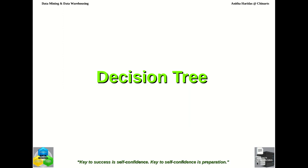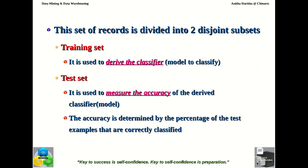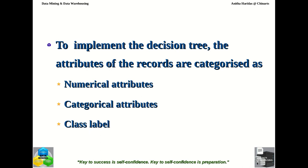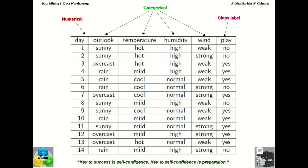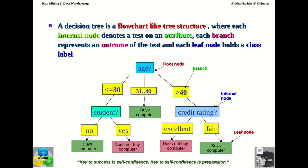In the previous video we talked about what a decision tree is, what training set and test set mean, and the three different attributes used for implementing a decision tree: numerical attribute, categorical attribute, and class labels. I gave you the definition of decision tree and asked you to correct some errors. So this is the corrected version. In our previous video, the leaf node, internal node, and branch node were marked in a wrong way. Please correct your nodes. This is the correct decision tree for the given data.